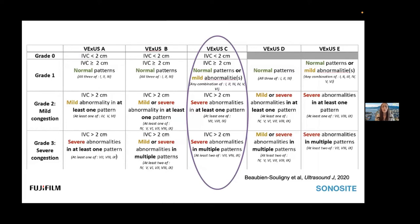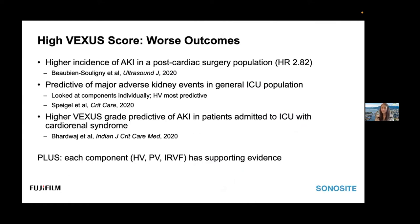This group proposed several combinations of scoring systems and tried to validate which had the best predictive value for AKI. They found that the VEXIS C grading performed the best — this is the one we use now in ultrasound practice. The IVC is kind of like your gatekeeper. If you have an IVC that is small and collapsible, do not pass go — you don't have significant venous congestion. In contrast, if you have severe abnormalities in multiple waveforms, you're more likely to have severe congestion. That was associated in this study with a higher incidence of acute kidney injury development, with a hazard ratio of just under three.